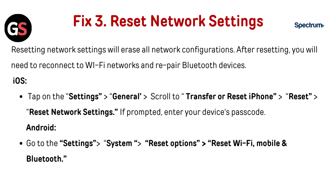Fix 3: Reset network settings. Resetting network settings will erase all network configurations. After resetting, you will need to reconnect to Wi-Fi networks and repair Bluetooth devices. For iOS: Tap Settings, go to General, scroll to Transfer or Reset iPhone, then go to Reset, then Reset Network Settings. If prompted, enter your device's passcode.